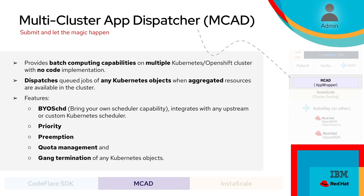AI models are undergoing rapid advances. Each week, there's a new model release for a new domain or a new model architecture. Wouldn't it be nice to test such new AI advances via a fire-and-forget model? Multi-Cluster App Dispatcher is here to address such needs. Multi-Cluster App Dispatcher, or just MCAD, provides batch computing facilities for Kubernetes or OpenShift clusters with no code implementation.